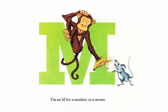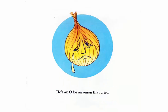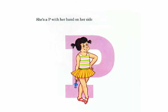I'm an M for a monkey or a mouse. You're an N like a tilting house. He's an O for an onion that cried. She's a P with her hand on her side.